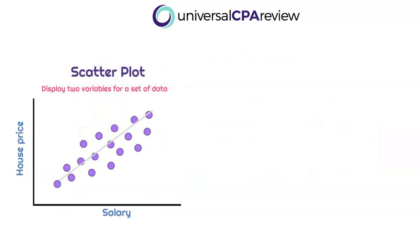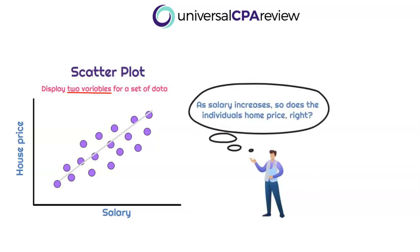The next chart is a scatter plot — an old-school chart that has been around in Excel forever. A scatter chart allows you to display two variables for a set of data. In this example, we have salary and house price by individual. We plot the data and look for trends: as salary goes up from left to right, the amount spent on a house also goes up. So as a person's salary increases, so does the amount they spend on a house.